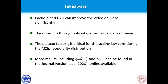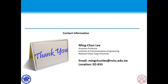At the end, we provide some takeaways. First, by analyzing the scaling law, we confirm the benefit of the cache-aided D2D network for video delivery under the practical n-Zipf probability distribution. We also show that the achievable throughput attains optimal scaling performance for the n-Zipf distribution. We see that the plateau factor Q is critical for the scaling law under the n-Zipf distribution. Finally, we note that there are more results in our general version, which extends the analysis by providing results for other regions of Q and gamma. Thank you for your attention. If you have any questions, please contact me.